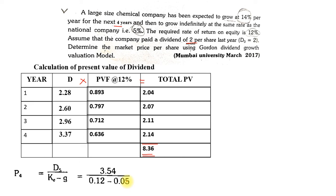That is the substitution of values into the formula. We already had 3.37 on our calculator, plus 5% because after the fourth year growth is stagnant at 5% — only a fixed growth of 5%. So we got 3.54. Cost of equity was 12% and growth is 5%, so 3.54 / 0.07 gives the value as 50.57. That is the present value of the share as at the end of the fourth year.